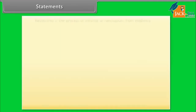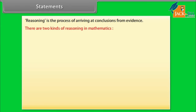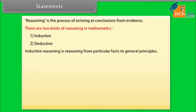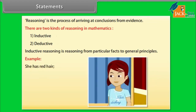Reasoning is the process of arriving at conclusions from evidence. There are two kinds of reasoning in mathematics: inductive and deductive. Inductive reasoning is reasoning from particular facts to general principles. For example, she has red hair, therefore she has a temper.